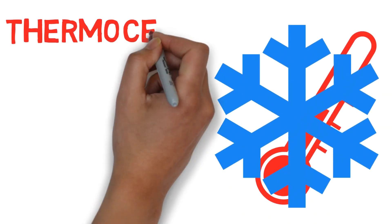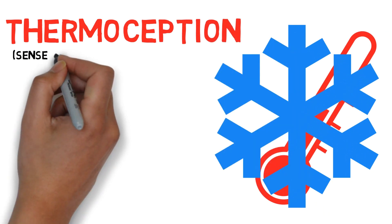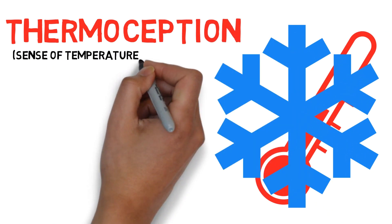Thermoception is our sense of temperature. It allows us to know if we're too hot or cold, but what does it mean to be over or under-sensitive to it? Let's take a look.